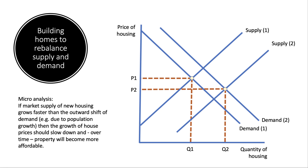Keep in mind the estimate that equilibrium in the housing market requires supply to grow every year by about one percent. There are over 28 million homes and flats in the UK, and one percent of that is 280,000 — so the figure to keep in mind is that we probably need around 300,000 extra homes per year in the UK to really address the affordability issue.